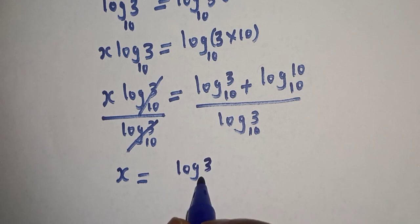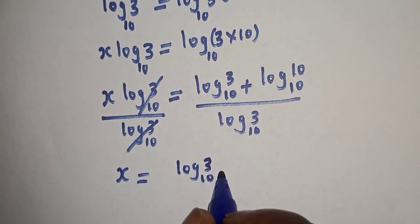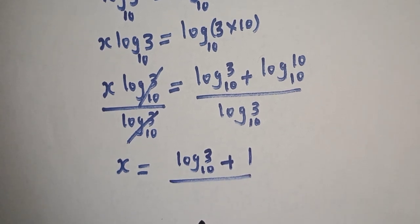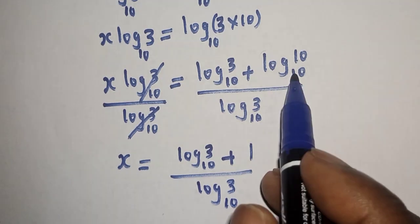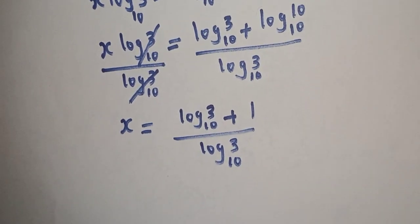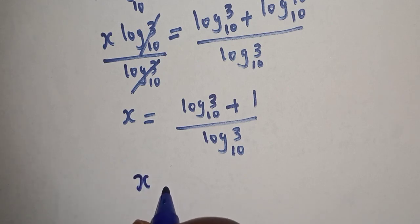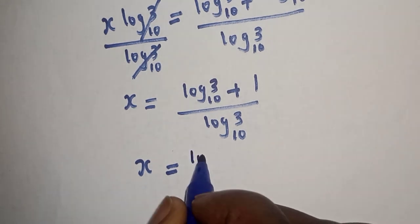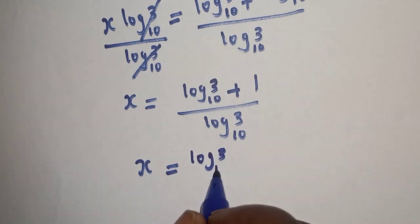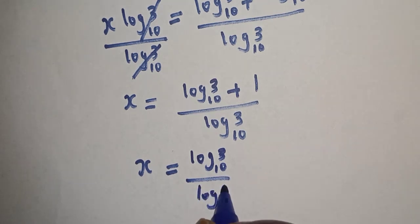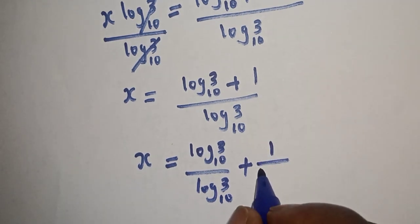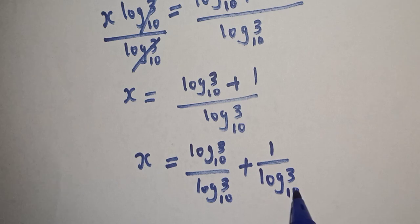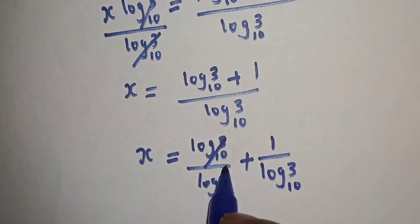x equals log 3 base 10 plus 1 over log 3 base 10, because log 10 base 10 is 1. This will cancel this.